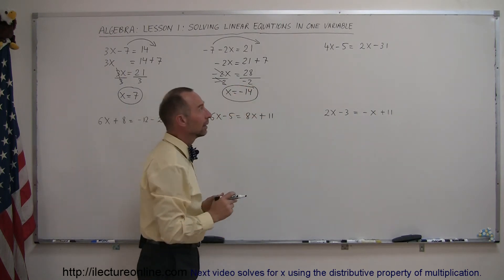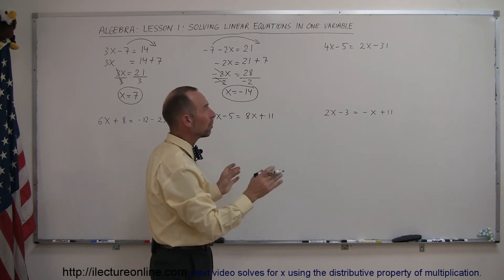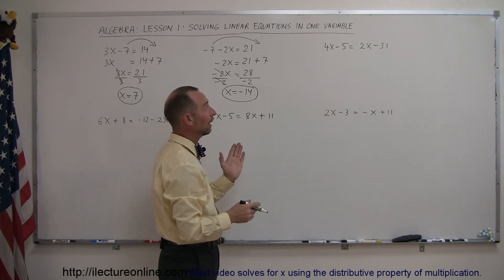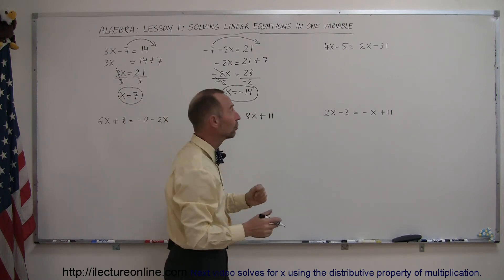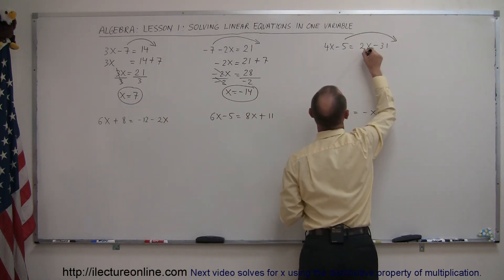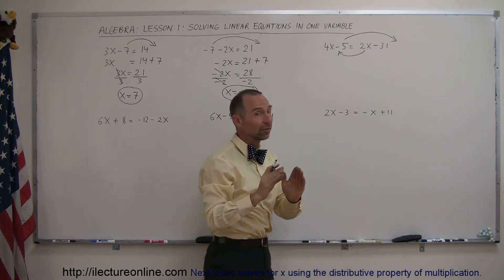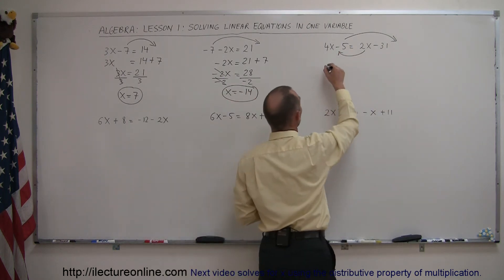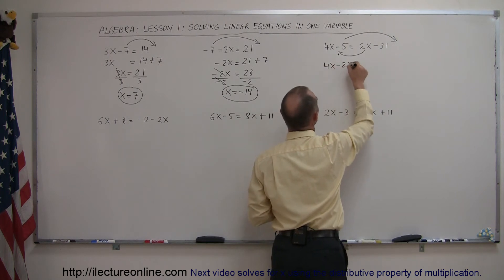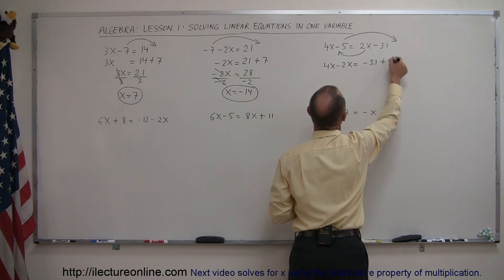Our next example has terms with X's on both sides of the equation. We want to move those to the left side, and any numbers without an X move to the right. So the minus 5 moves to the right and the 2X moves to the left. Whenever you cross the equal sign, the sign changes. So this becomes 4X minus 2X equals minus 31 plus 5.